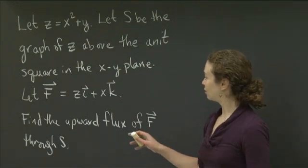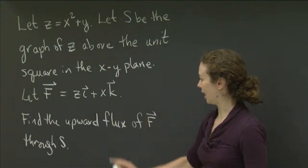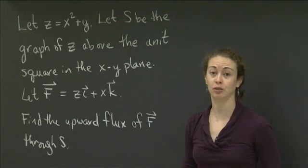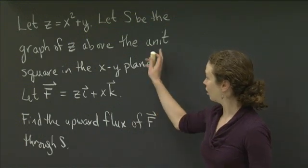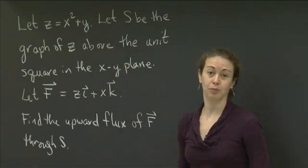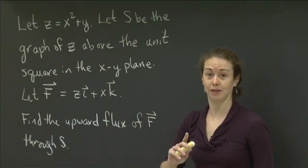And what we'd like to do is for F equal to zi plus xk, find the upward flux of F through S. So S is our surface that's a graph over the xy plane in the unit square of z equal to x squared plus y. And we want to compute the upward flux of F through that surface.